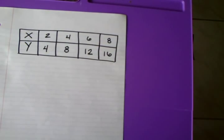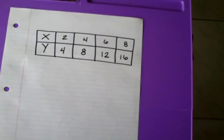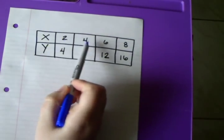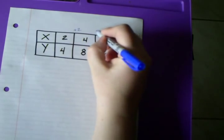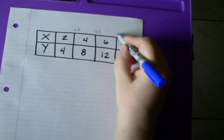Here's another example here. So again, I'm going to go and identify the changes in the x's and changes in the y's. To make a 2 into a 4, I'm going to add 2. A 4 into a 6, again. And a 6 into an 8.